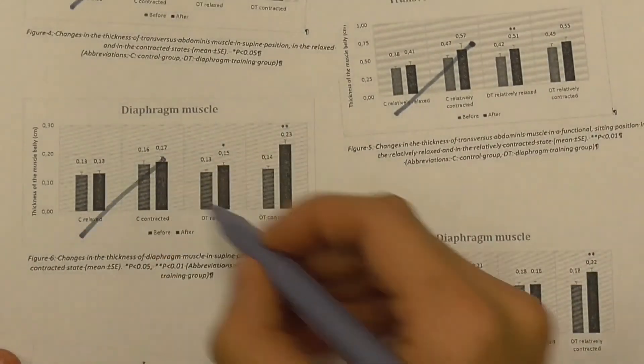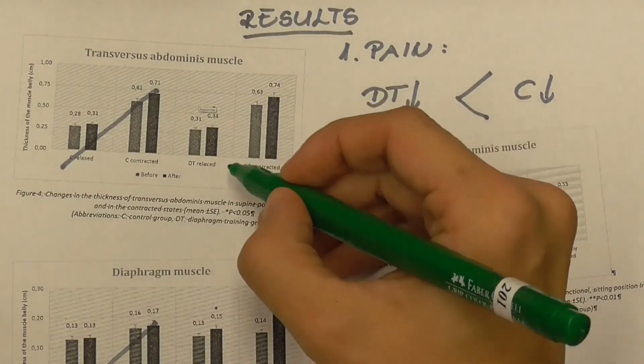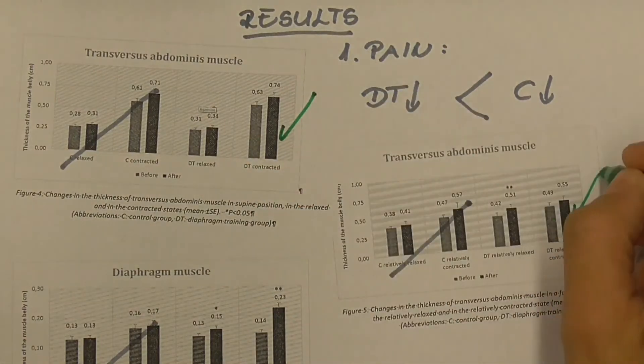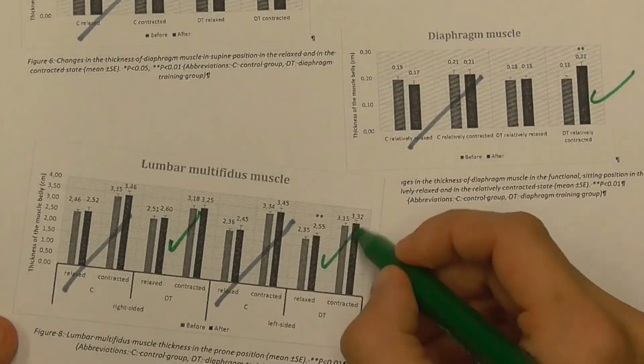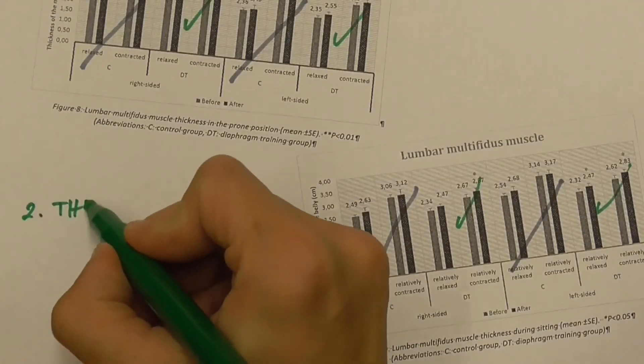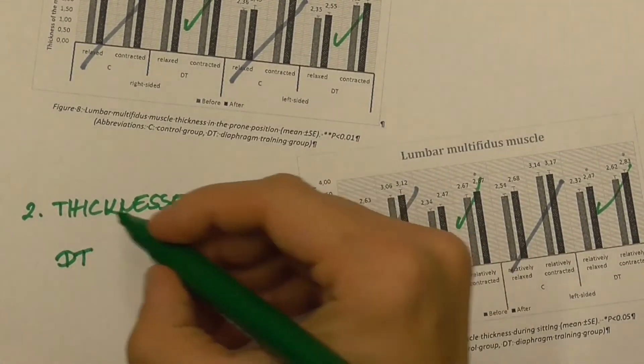Concerning muscle thickness, we found that in the case of the control group there wasn't any significant change after the training. Contrary to this, in the case of the diaphragm training group, significant increases in thickness were recorded in all the assessed muscles, in lying and in sitting positions as well.